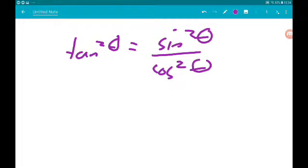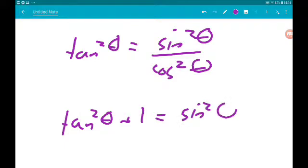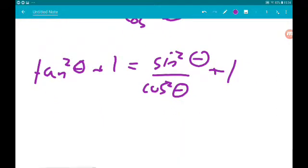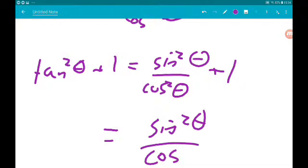So tan squared is sin squared over cos squared. Tan squared plus 1 is sin squared over cos squared plus 1.